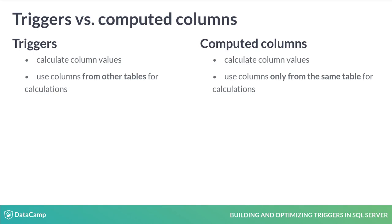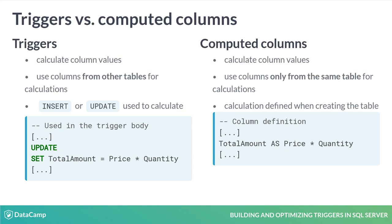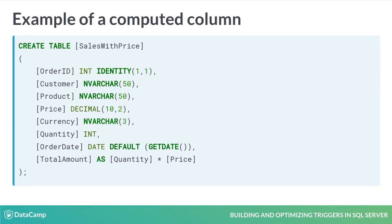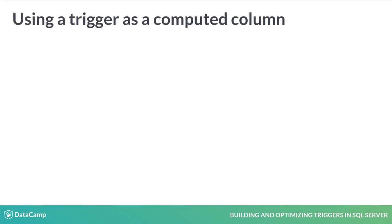While this calculation will be done with INSERT or UPDATE statements when using a trigger, for a computed column it will be part of the table definition. In this example, the column TotalAmount is a computed column. Its value comes from the multiplication of the Quantity and Price columns from the same table. But if those two columns were not part of the same table, we wouldn't be able to do the calculation using a computed column — in that case, we could replace the computed column with a trigger definition.